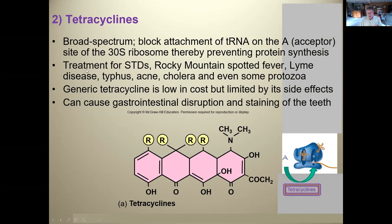Tetracyclines are great antibiotics, especially against certain sexually transmitted diseases and tick-borne diseases like Rocky Mountain spotted fever and Lyme disease. We also use them to treat acne, cholera outbreaks, and even some protozoa. They affect the ribosome of the mitochondria in eukaryotic cells. They're fairly easy and cheap to manufacture with limited side effects. The downside is they can cause staining of teeth and some GI tract issues — something to be conscious about.